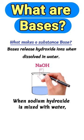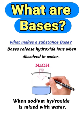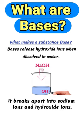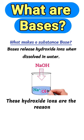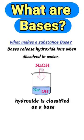When sodium hydroxide is mixed with water, it breaks apart into sodium ions and hydroxide ions. These hydroxide ions are the reason why sodium hydroxide is classified as a base.